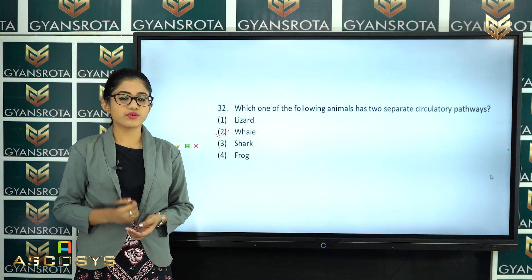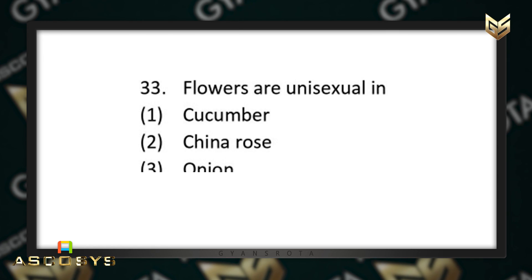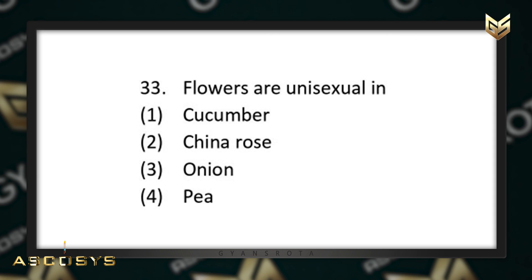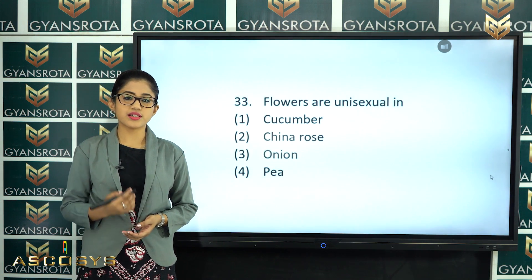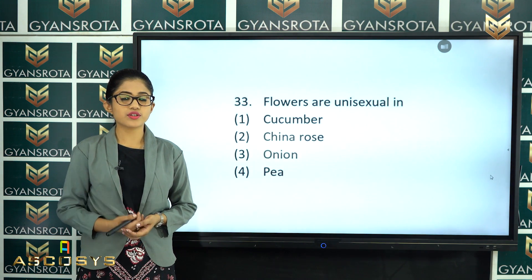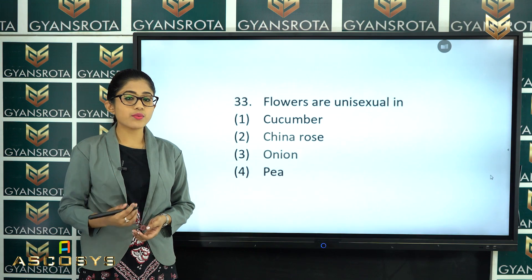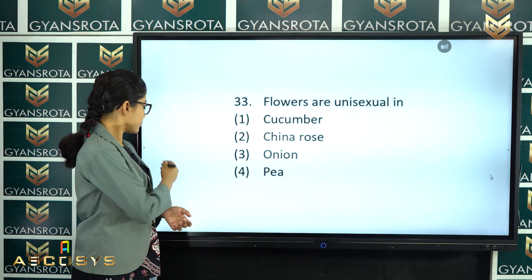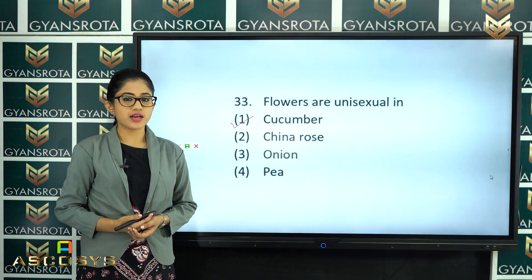The next question is question number 33. Flowers are unisexual in cucumber, china rose, onion, or pea? This is from class 12, chapter 1, Reproduction in Organisms. We have discussed about unisexual and bisexual flowers. Among the options, the correct answer is option number 1 — cucumber has unisexual flowers.